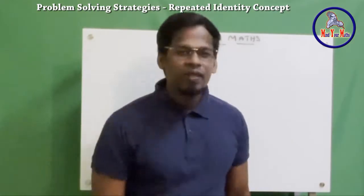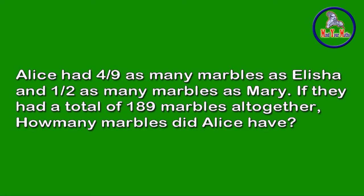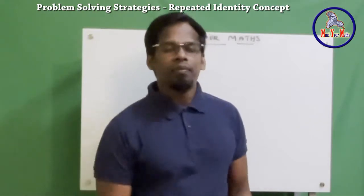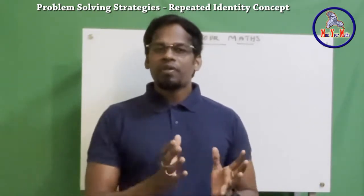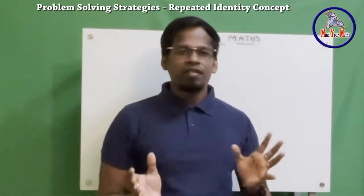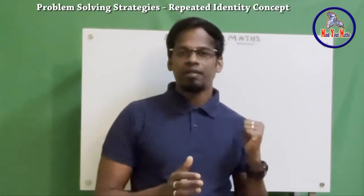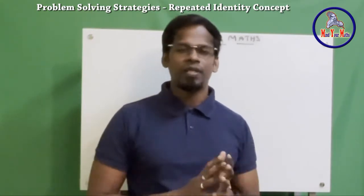Let me read the problem now. Alice had four-ninths as many marbles as Alicia, and half as many marbles as Mary. If they had a total of 189 marbles altogether, how many marbles did Alice have? In this problem the numbers are given as fractions. You might also get ratios or percentages — you just need to convert those into fraction form to use these steps.